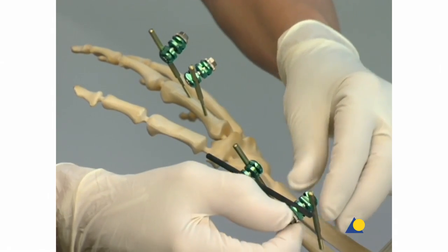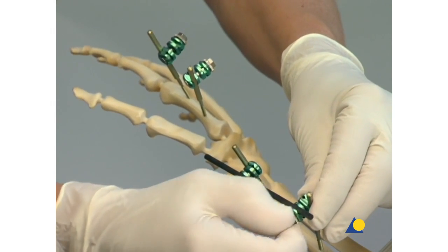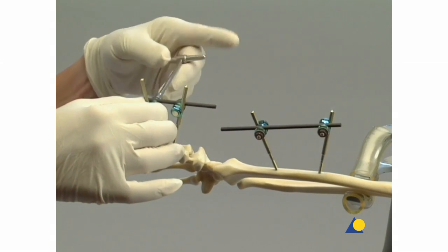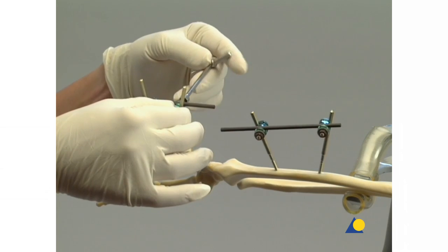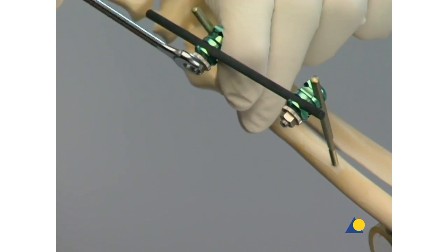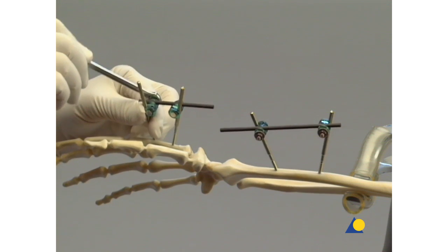The clamp nuts are tightened first by hand and then with the 7mm socket wrench. Final tightening is completed with the 7mm combination wrench.